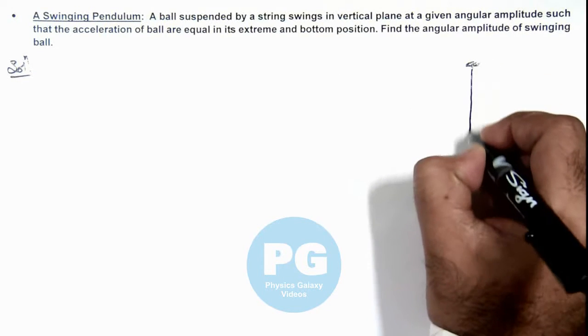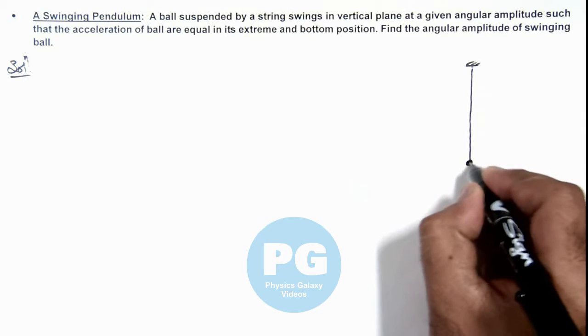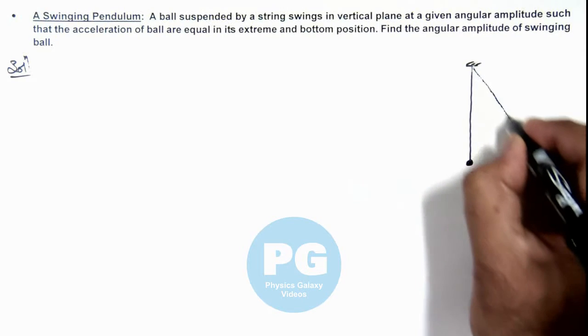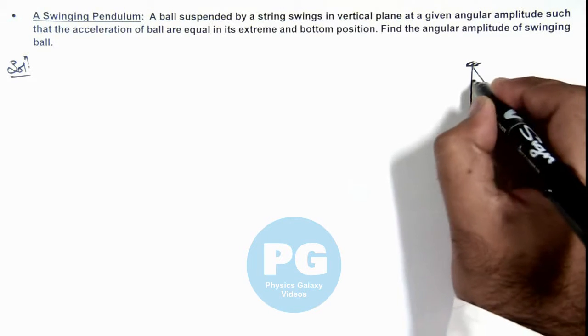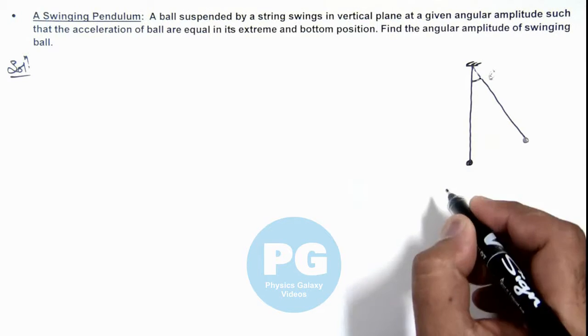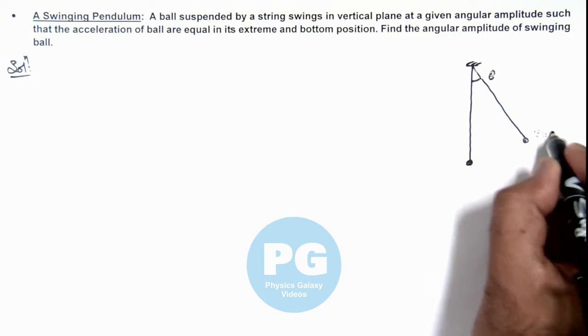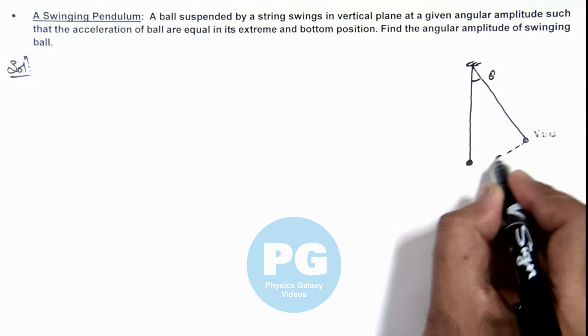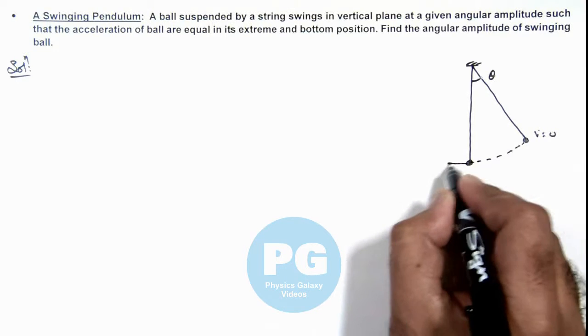This is the bottommost position of the bob and when it swings to an angle theta, then at this point its velocity is zero from where it starts, and when it reaches bottom it attains a speed v.